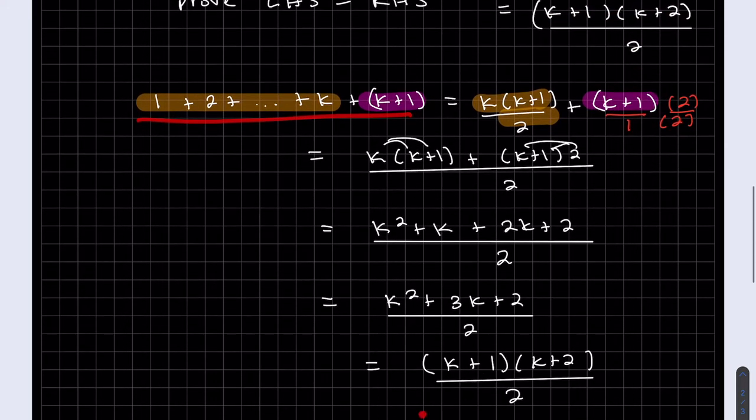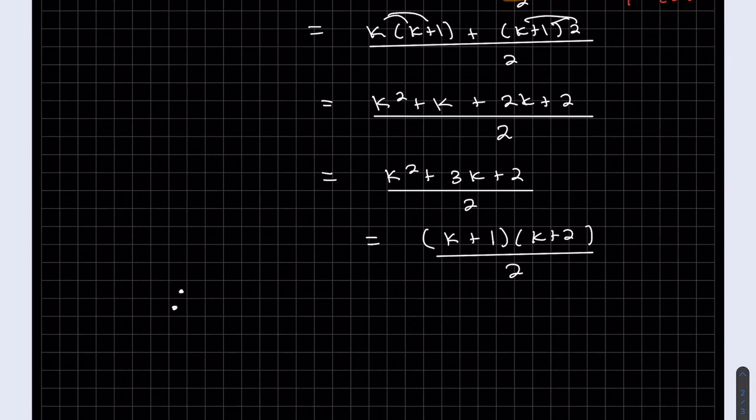So we have just proved the left-hand side is equal to the right-hand side. Left-hand side, right-hand side. We proved with algebra that it's true. And using the assumption, of course, right here. Therefore, don't forget your last step. Therefore, it's true for all numbers. QED. It has been shown in Latin.